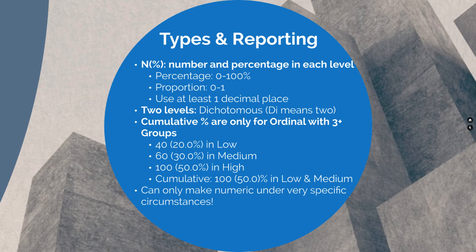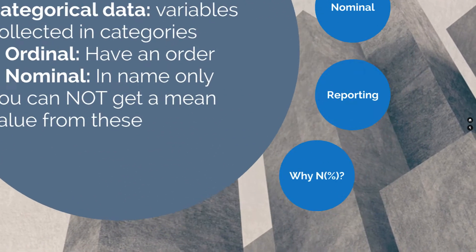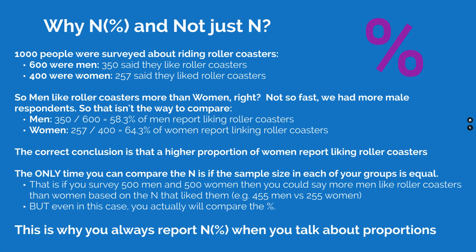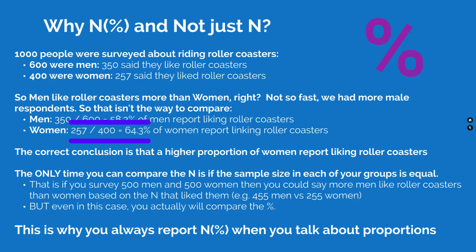You can only take categorical variables and make them numeric under very specific circumstances. Consider 1,000 people surveyed about riding roller coasters: 600 men and 400 women were surveyed. 350 men said they liked roller coasters, 257 women said they liked roller coasters. It seems more men than women — but that's based solely on count. More men answered the survey, so we compare percentages: 350 out of 600 men is 58.3%, whereas 257 out of 400 women is 64.3%. The correct conclusion is that a higher proportion of women report liking roller coasters.